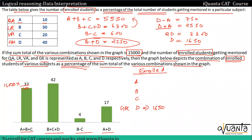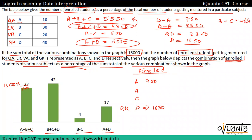d+a is equal to 2550. And d+c equals 6300 minus 1650, that is 4650. And d minus c value is given as 600.